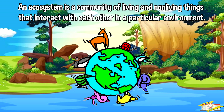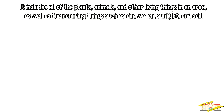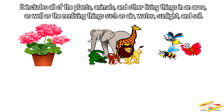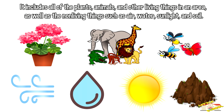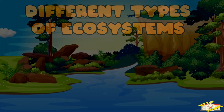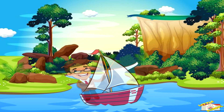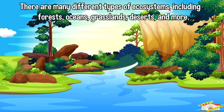It includes all of the plants, animals, and other living things in an area, as well as the non-living things such as air, water, sunlight, and soil. Let's go over the different types of ecosystems — there are many different types.